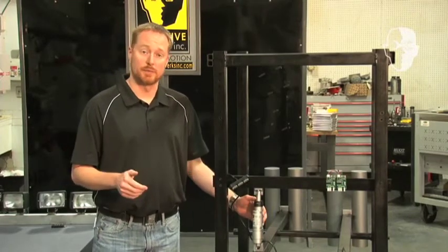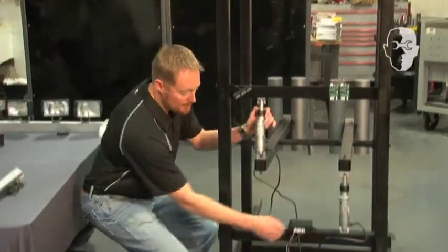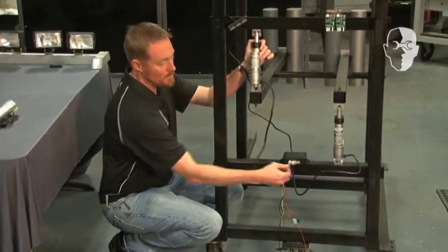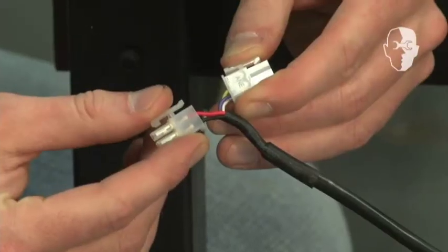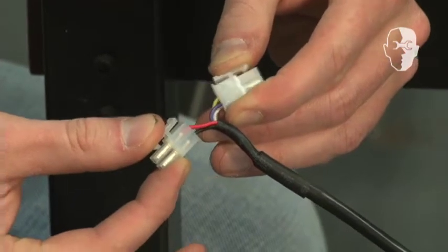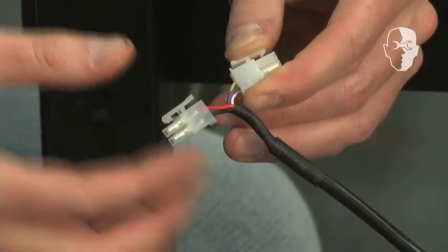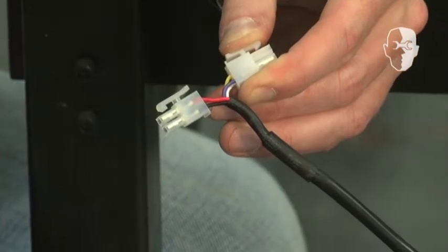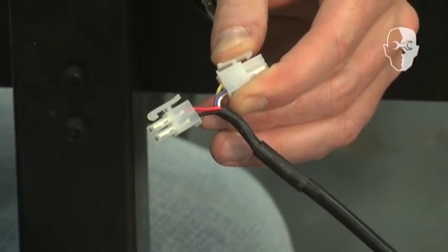Connection of the actuator is simple. A 2 pin red and black connector powers the actuator. A 3 pin connection conveys information between the controller and the actuator to determine a custom stroke length.